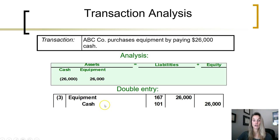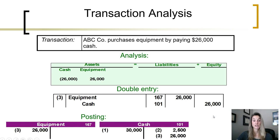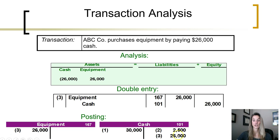Debited accounts are listed first followed by credited accounts indented. Total dollar amount of debits in the entry equals the total amount of credits. To actually cause those account balances to change, we post each debit and credit to the appropriate account in the ledger. We debit equipment for $26,000 to increase it, take our post reference account number back to the general journal, then credit cash $26,000 in the general ledger to decrease the cash account, and bring the post reference back to the general journal.